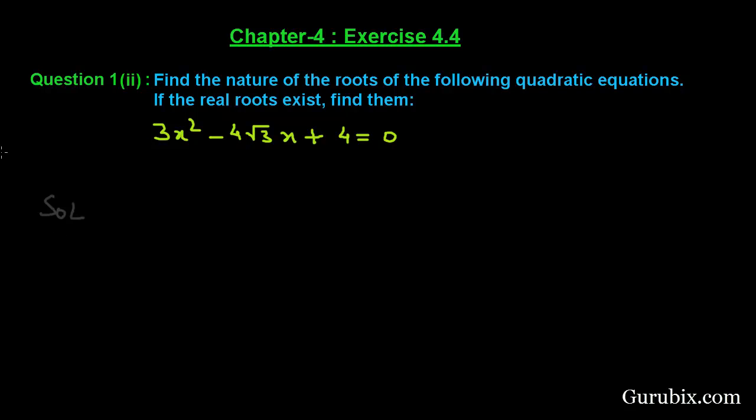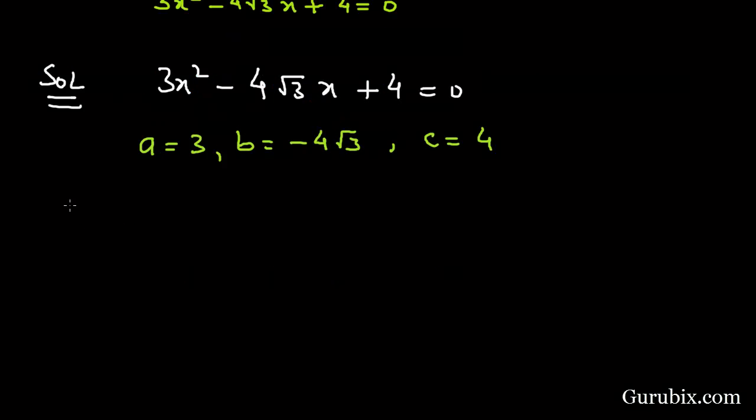First, we shall write the given quadratic equation in standard form: 3x² - 4√3x + 4 = 0. Here we identify the coefficients: a = 3, b = -4√3, and c = 4. Now we shall find the discriminant D.